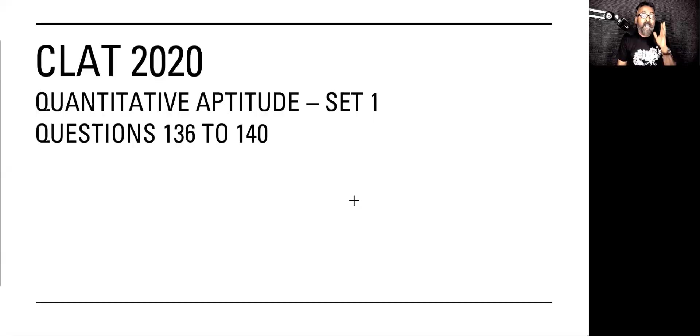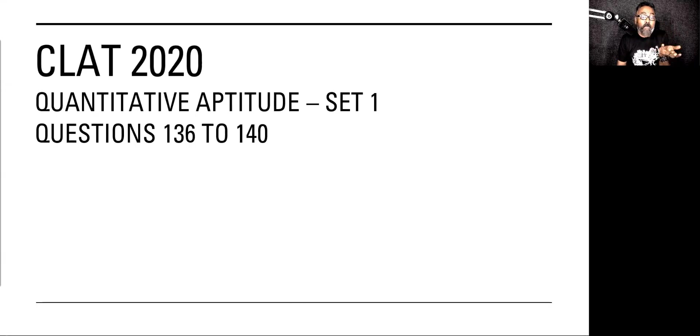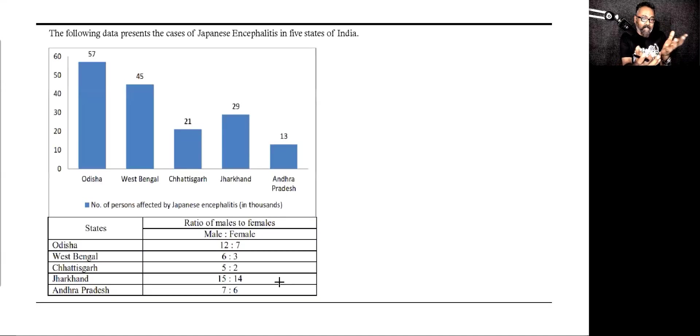This is the first set, ladies and gentlemen. Let's pick the first set here. This is question 136 to 140. So when you look at the set here, this is a data interpretation set. A chart is given.